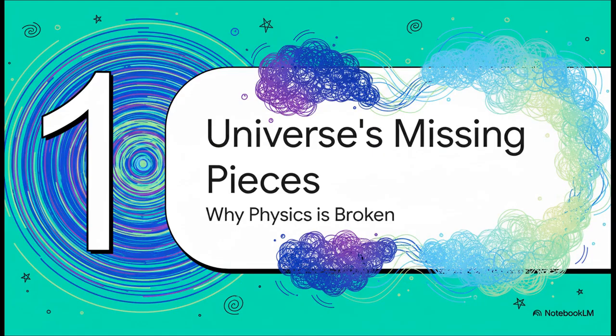All right, first things first. Let's set the stage. Why are scientists so sure that 95% of reality is just missing? Well, it's because our two best theories for explaining the universe are absolutely brilliant, but they're also fundamentally broken.